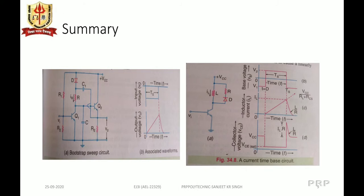In summary, first we saw the bootstrap sweep circuit, which consists of two transistors Q1 and Q2. Q1 acts as a switch and Q2 is a unity gain emitter follower amplifier. Capacitor C1 is initially charged to VCC. When Q1 is turned OFF by application of a negative pulse, C1 starts charging capacitor C through current IR, and the voltages across C1 and R remain virtually constant due to the large value of C1.